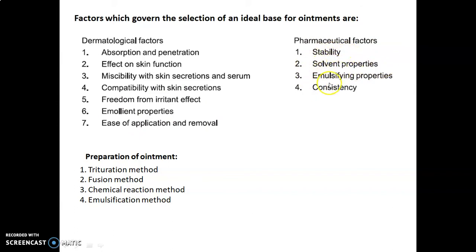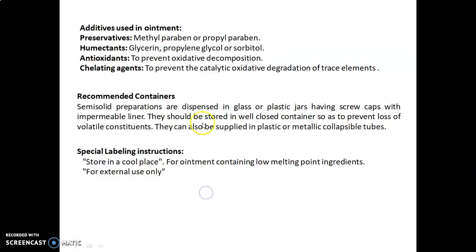Preparation of ointment involves four methods: trituration method, fusion method, chemical reaction method, and emulsification method. The additives used in ointments include: preservatives such as methylparaben or propylparaben; humectants such as glycerine, propylene glycol, or sorbitol; antioxidants, which are used to prevent oxidative decomposition; and chelating agents, which are used to prevent the catalyzing of oxidative degradation by trace elements.